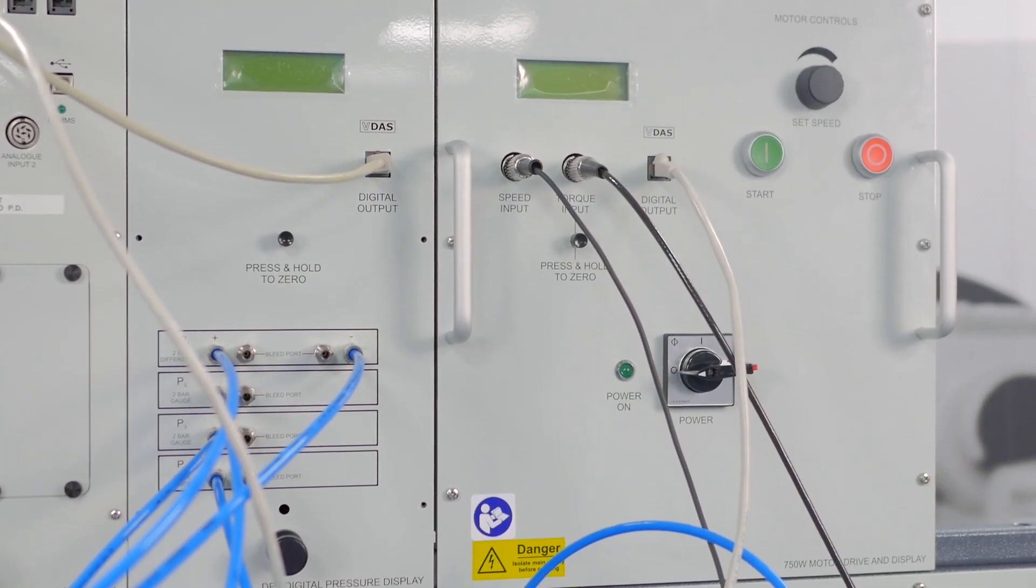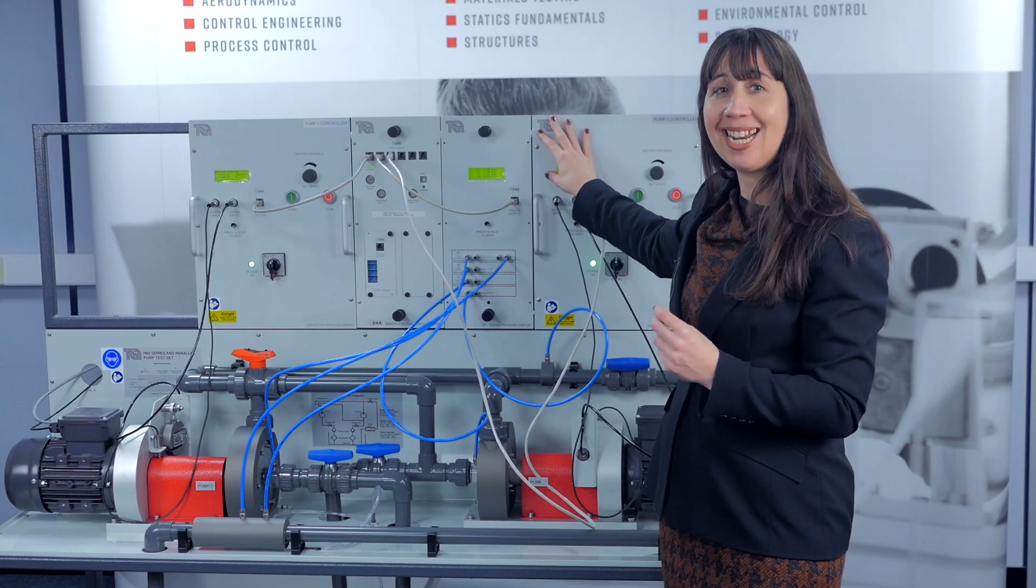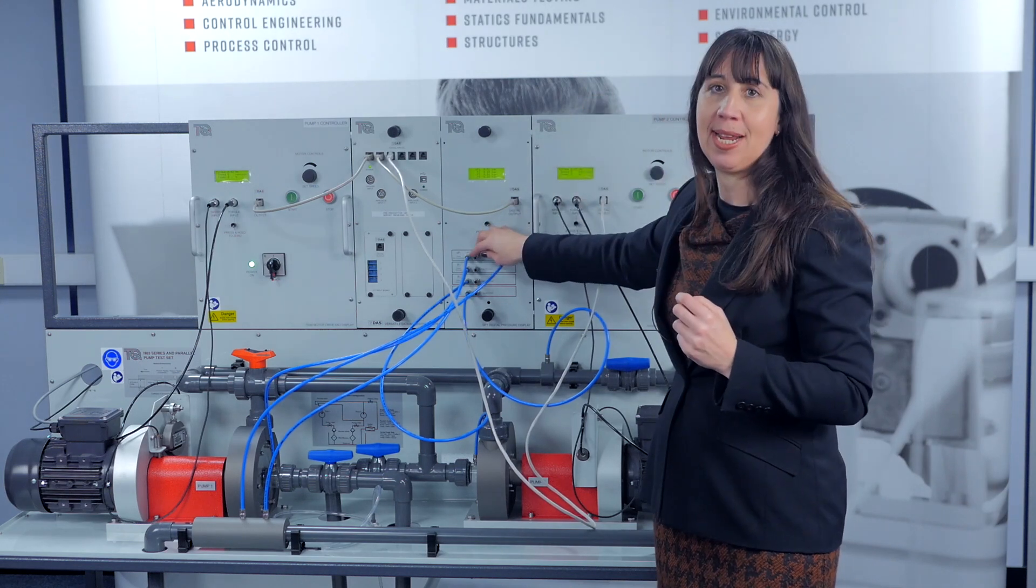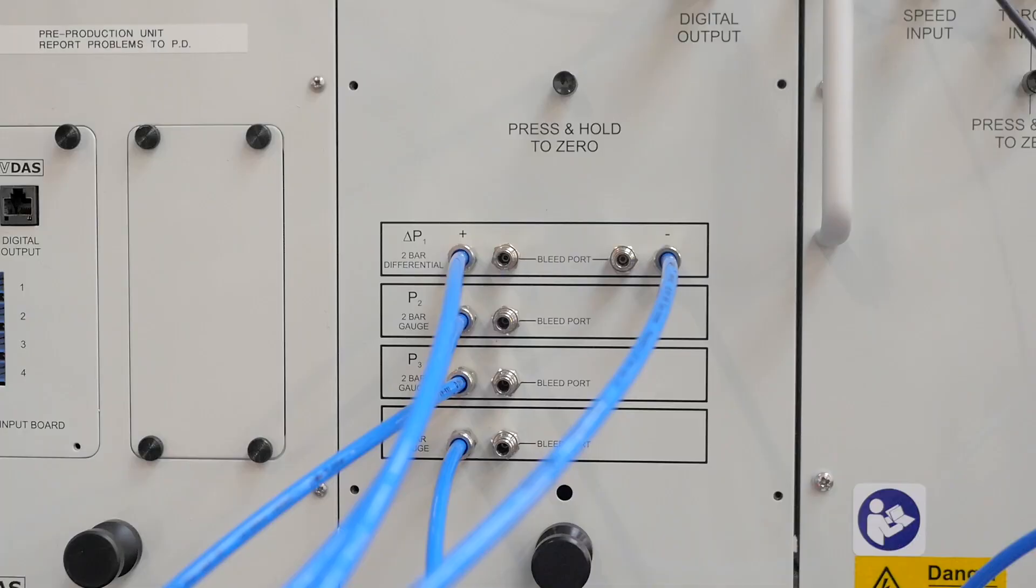Using the digital pressure display, the DP1 that's included, students can take readings of the inlet and outlet pressures using a series of pressure tappings. Each pressure tapping includes a bleed port needed to bleed trapped air from the pressure tapping pipework.